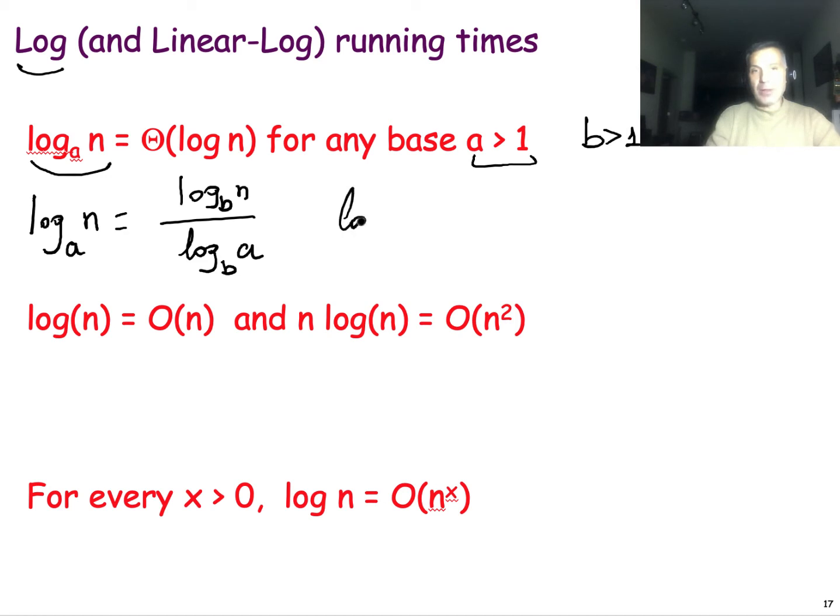What this means is that if the running time is expressed in terms of base a, I can just change it into base b, scaled by a proportionality constant. If the running time is log base a of n, this is simply theta of log n for any base. Very often we don't even write what the base is.